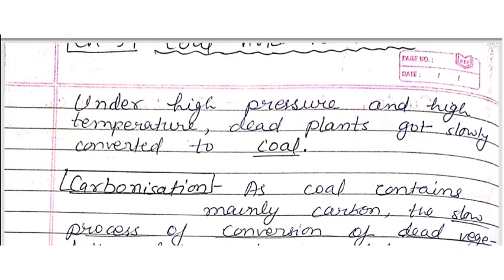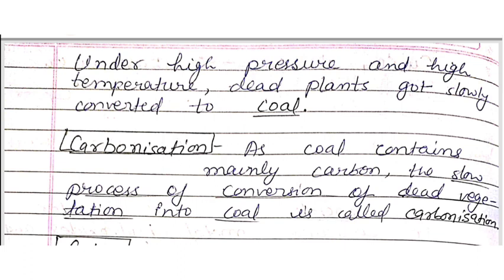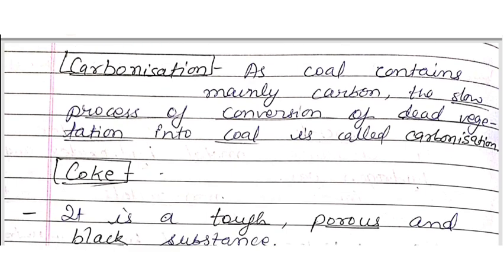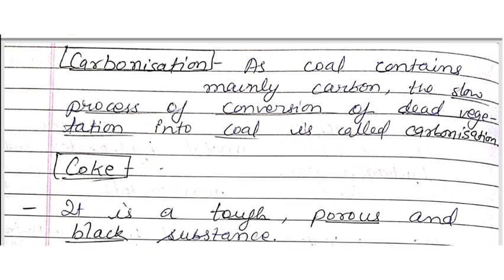First point: under high pressure and high temperature, dead plants got slowly converted to coal. When there is a lot of pressure and temperature acting on dead plants, coal is formed. This process takes thousands of years. As coal contains mainly carbon, the slow process of conversion of dead vegetation into coal is called carbonization.